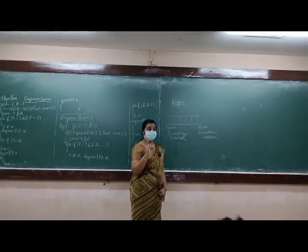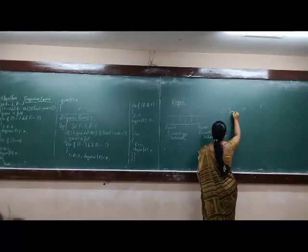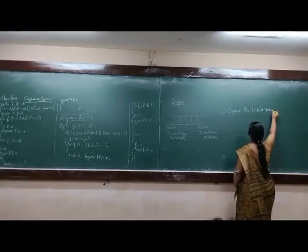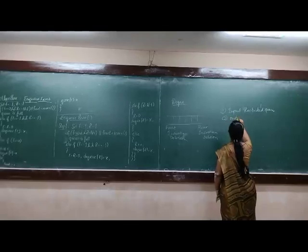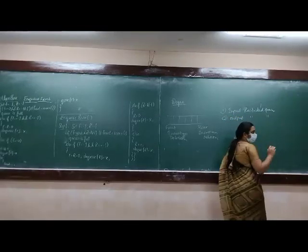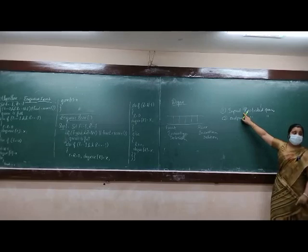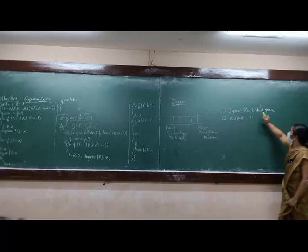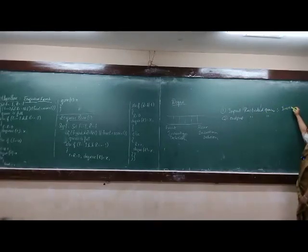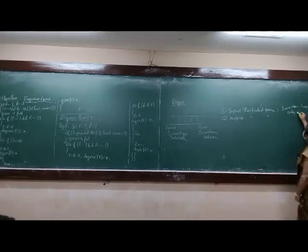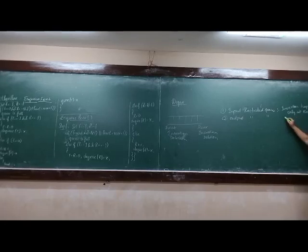First is input-restricted deque. What is the first type? Input-restricted deque. Second is output-restricted deque. Input-restricted deque: general guard insertion. Insertion happens only at the rear end. But deletion happens at both ends.